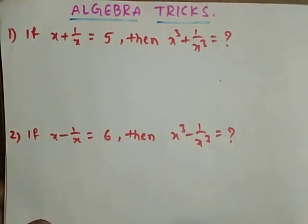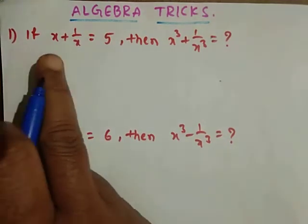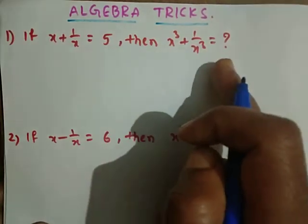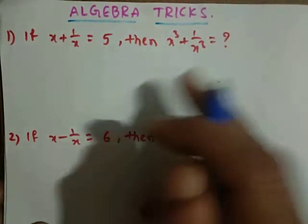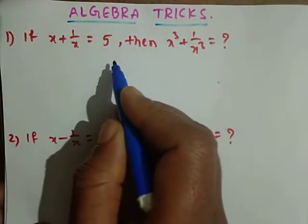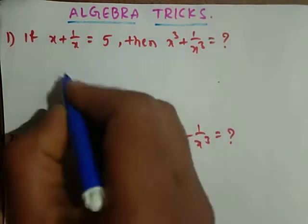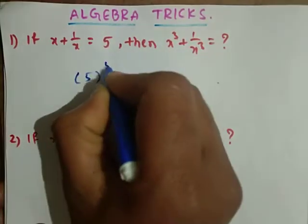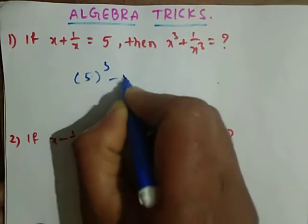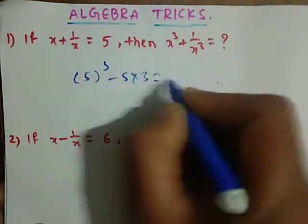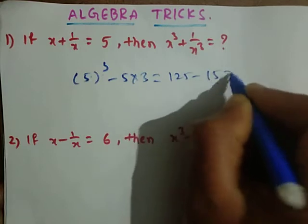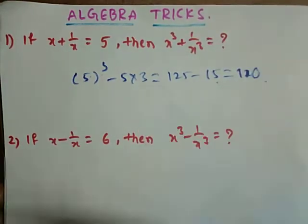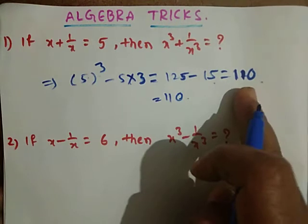Hello friends, welcome to Learn with GBR. If x plus 1 by x equals 5, then x cube plus 1 by x cube equals how much? x plus 1 by x equals 5, so that is 5 cube minus 5 into 3. That is equal to 5 cube, 125, minus 15. That is equal to 110.